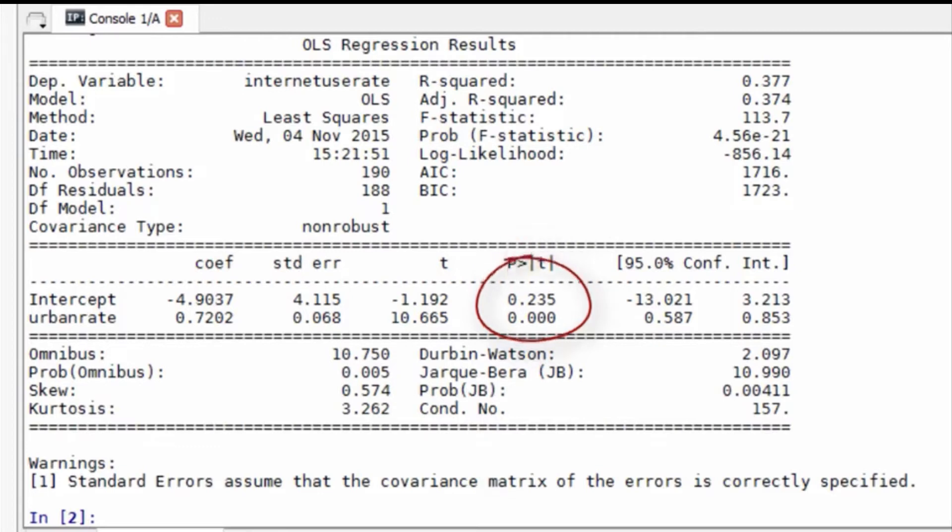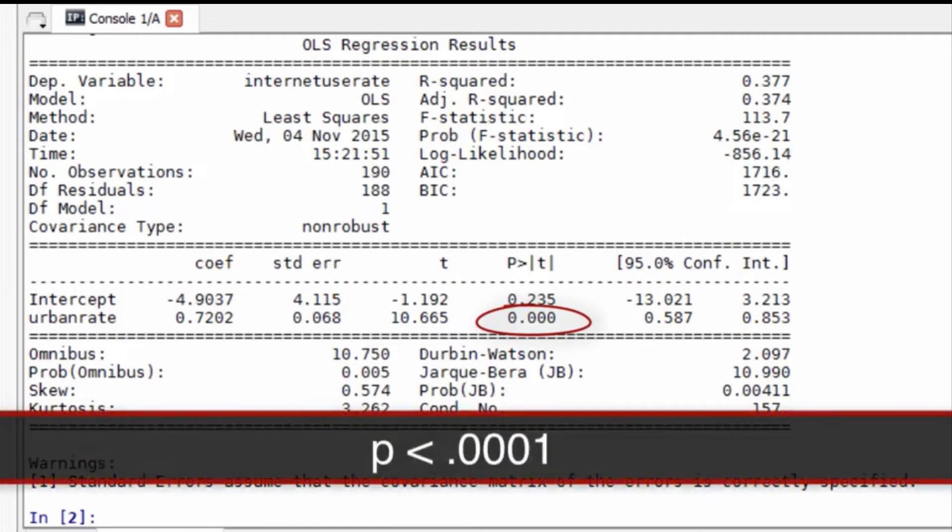This p-value will be the same one we get if we run a Pearson correlation on these two variables. The p-value is 0.000, which means that it's really small. Here you would report the p-value as p less than .0001.